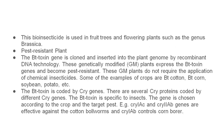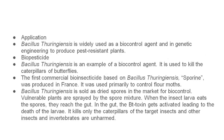Bacillus thuringiensis is a pest control biocontrol agent working against caterpillars of butterflies. The first commercial product was produced as Bacillus thuringiensis spores — this was produced in France. It can be applied as dry spores available in the market, sprayed on plants, applied to insect larvae, and activates in the gut, activating the Bt toxin to kill the insect larvae.